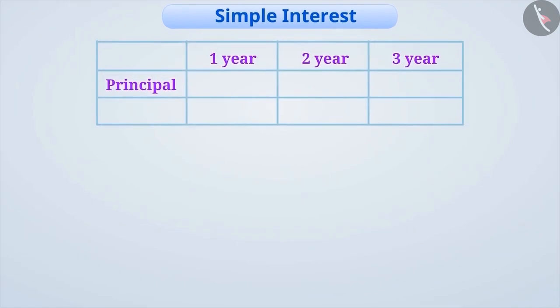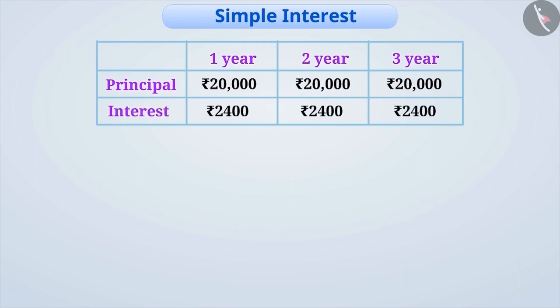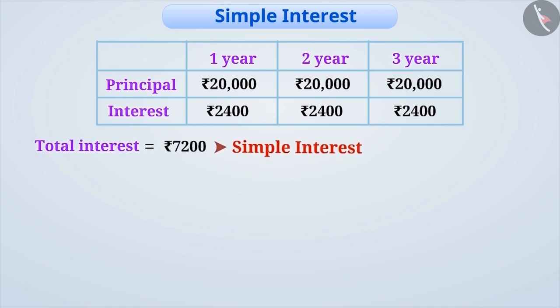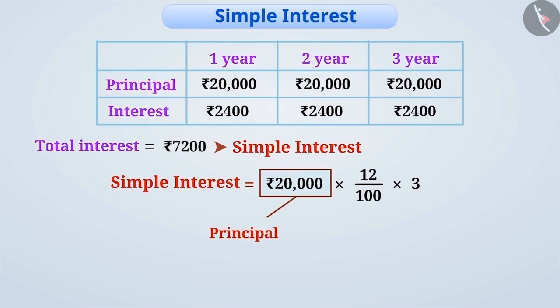There is an important point to be noted here. The principal is the same for all three years. If the principal is the same for every year, then the interest will also be the same. Interest calculated in this manner is called simple interest. To find the simple interest, we have multiplied principal, rate of interest, and time.